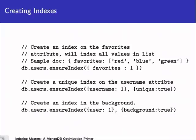We can create unique indexes — for example, db.users.ensureIndex on username with a unique option, since username is an attribute we want a uniqueness constraint on. We can also create indexes in the background. By default, indexes build in the foreground and will block. If you need to create an index on a production database with a lot of data, specify background as true. Keep in mind there will be a performance hit on the server while that index is being created.